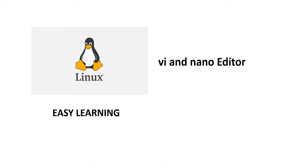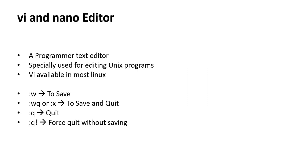Hi everyone. In the last video we covered how to create files using the cat and touch commands. In this video we will cover how to edit files using VI and nano editor. VI is a programmer's text editor, specially used for editing Unix programs, and it is available in most Linux systems. Compared to nano, VI editor is available in most Linux systems.